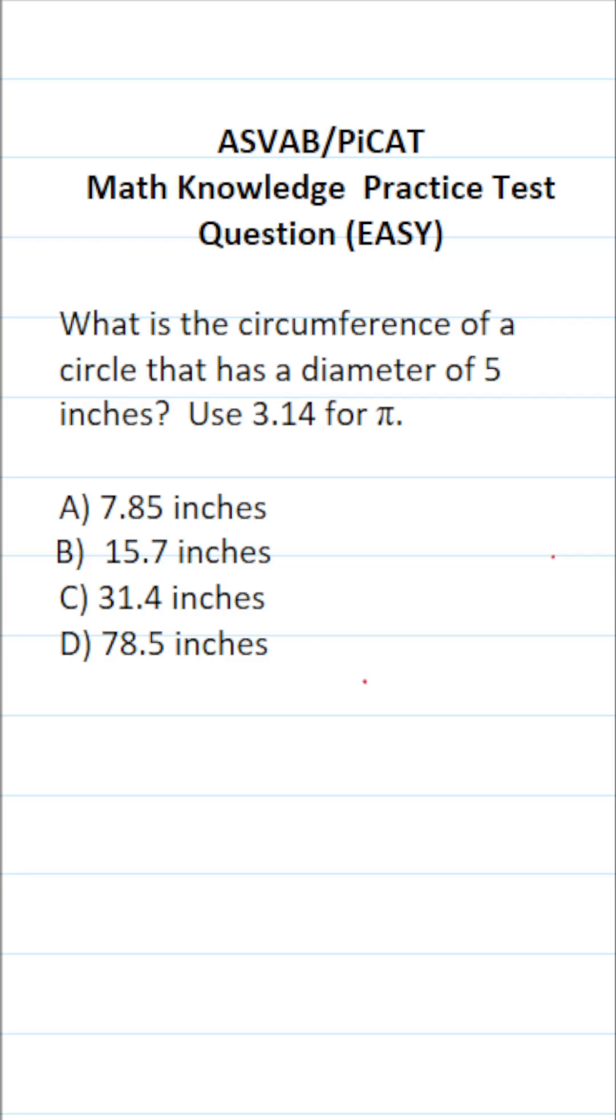This math knowledge practice test question for the ASVAB and PiCAT says, what is the circumference of a circle that has a diameter of 5 inches? Use 3.14 for pi.